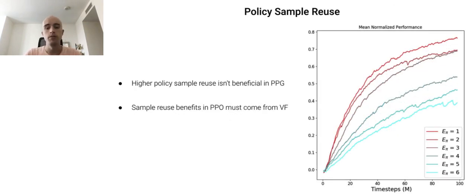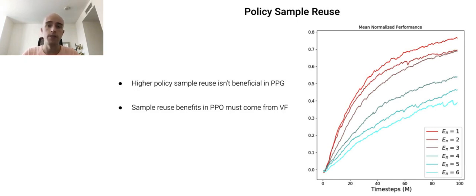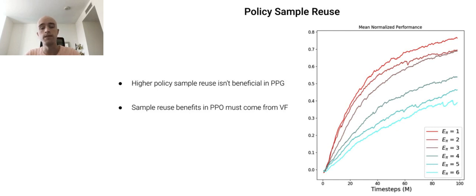We'll first look at what happens when you vary policy sample reuse in PPG. We do this by changing the number of policy epochs performed on each rollout during the policy phase. Surprisingly, we find that PPG doesn't benefit at all from increasing the level of policy sample reuse — it's best to use each data point exactly once to train the policy. This was a surprising result, since we already knew that PPO prefers a higher level of sample reuse. Either the policy or the value function must be benefiting from the increased sample reuse in PPO. If the benefit isn't coming from increased policy sample reuse, it must be coming from increased value function sample reuse.